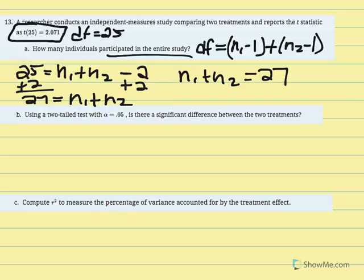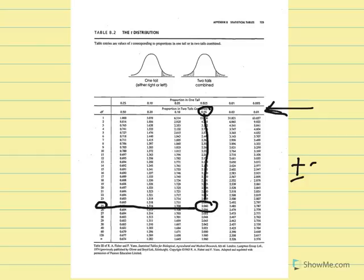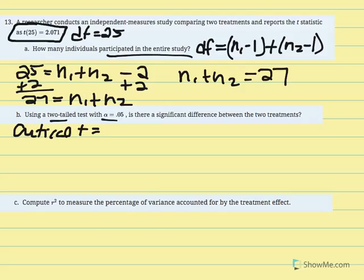Next, using a two-tailed test with alpha equal to 0.05, we find our critical t and determine if there's a significant difference between the two treatment conditions. Using our t-distribution with degrees of freedom 25 and a two-tailed test at alpha 0.05, we find where they intersect. We get a critical t of plus or minus 2.060.